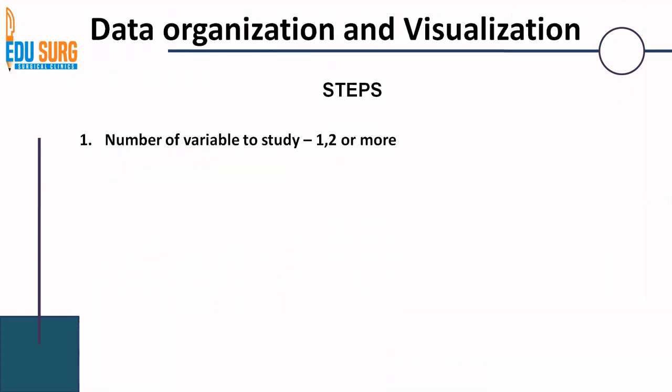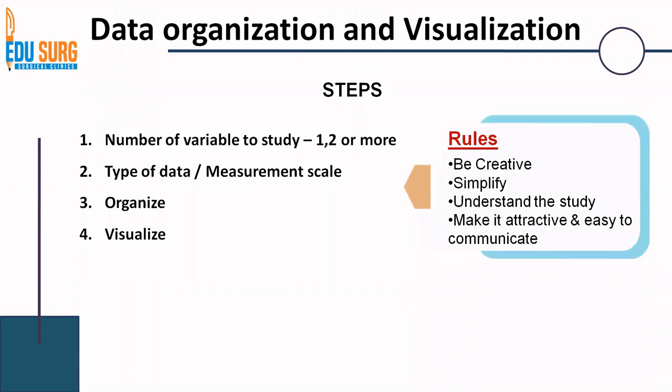The same steps are going to be followed. We will see the number of variables to study, one, two or more. We will see the type of data, as I have already said this is going to be numerical or quantitative data. The scales are going to be interval and ratio scale. We will organize and then we will visualize. The same rules apply.